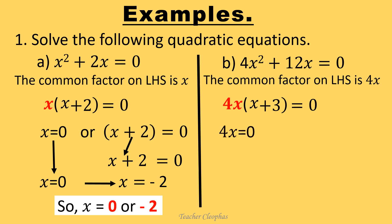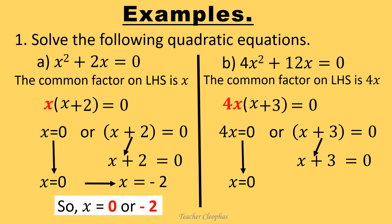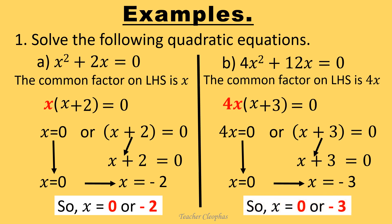As usual, either 4x equals to zero or x plus 3 equals to zero. 4x equals to zero implies we divide both sides by 4, so x remains to be zero. Then we proceed to x plus 3 equals to zero. To remain with x on the left hand side, we subtract 3 on both sides, so x equals to negative 3. Clearly, x is equal to zero or negative 3, which we term as our answer.